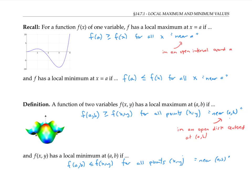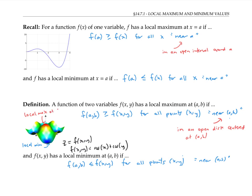In this example, I've graphed a function z equals f of x, y, where f of x, y is cosine of x plus cosine of y. Points on the graph are color coded, so that points with large z values are colored red and points with small z values are colored blue. We can see that this function has a local maximum at this peak that's colored red, and local minimums at all of these valleys that are colored blue. The local maximum is at the point where x is zero and y is zero, and this particular local min occurs at the point where x is pi and y is pi.